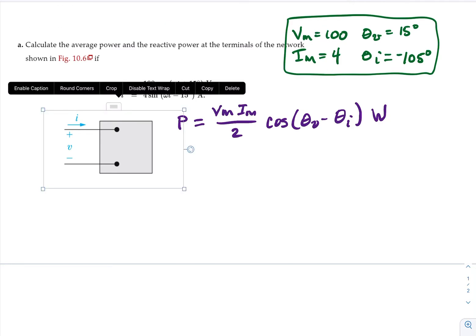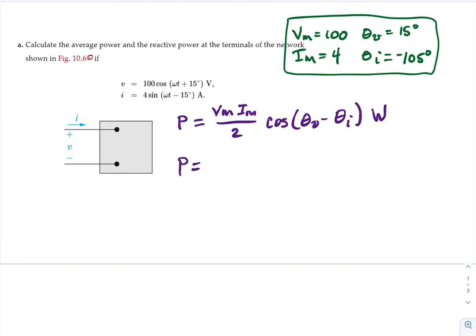So let's fill in. P equals 100 times 4 divided by 2 cosine, and this is volts and this is amps. Cosine theta sub V, which is 15 degrees minus theta sub I, which is minus 105 degrees. And again, that's watts. So P equals, I believe I can stick this in my calculator, but why do that when I already have it written out? Minus 100 watts.